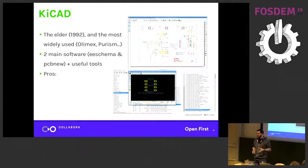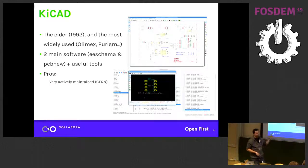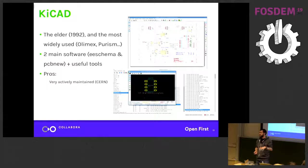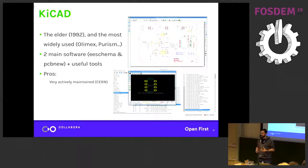KiCAD has some big advantages over other open-source EDA packages. First, it is very actively developed. CERN — the European Center for Nuclear Research — is devoting several people working full time on KiCAD. Before their contributions, around version 3, the software was harder to use. Starting with version 4 and the CERN contributions, the software made a great leap forward in terms of usability and features — they did an amazing job — and it keeps getting better.